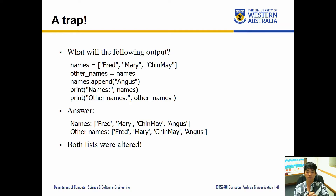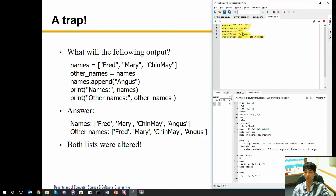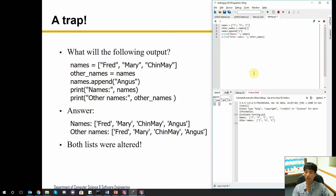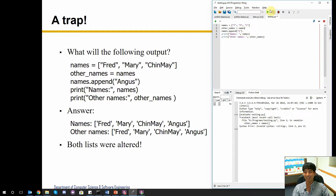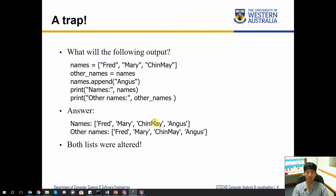Now we're going to look at aliasing problems. Here's an example: we create `names` as a list, and we create another list `other_names` which we think is going to copy from our original list. We then modify the original `names` list and print both. What's happening is that we modified the `names` list only, but when we look at `other_names` it has also been changed — which we didn't expect. This is an aliasing problem.